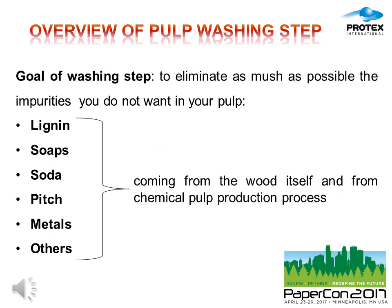What is the goal of the washing step? It is to eliminate as much as possible all the impurities contained in the pulp that you don't want to carry on in your process. The most important impurities we are speaking about are lignin, soaps, soda, pitch, and metals. Some of them come from the wood itself and some others come from the chemicals you put at the beginning of your pulp production process.